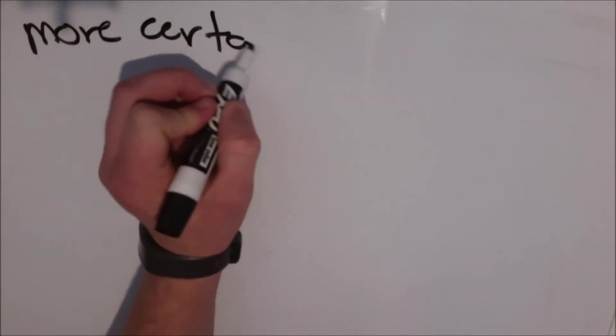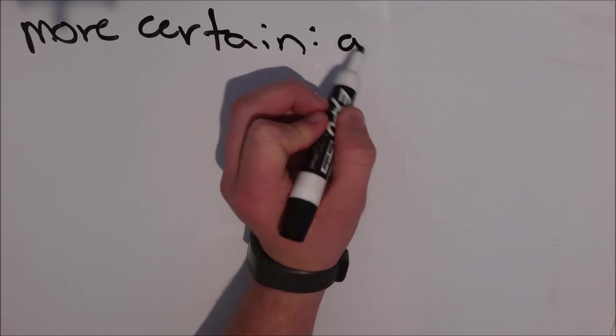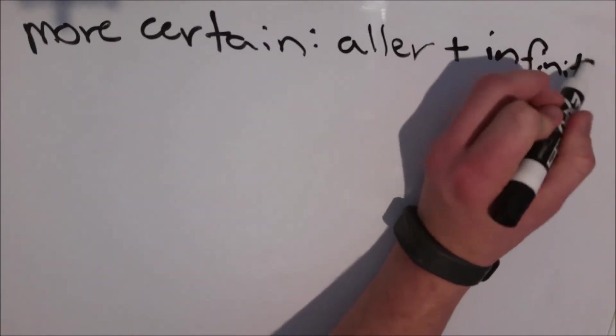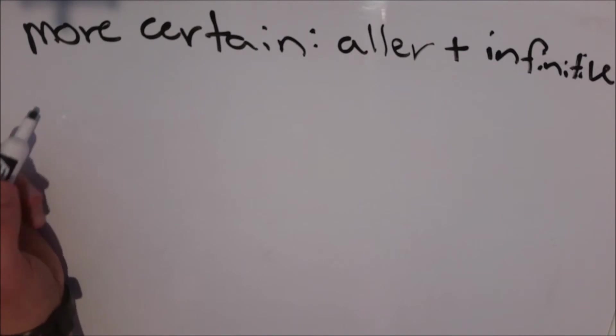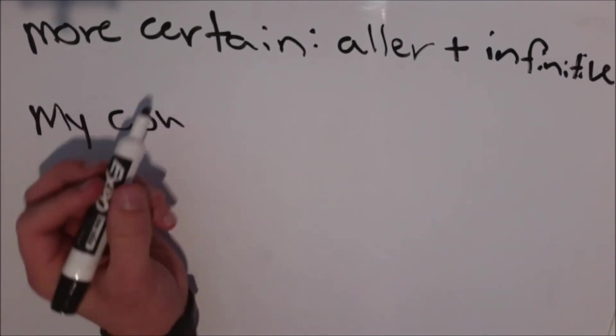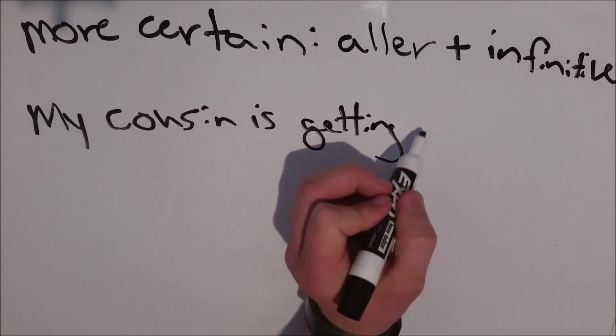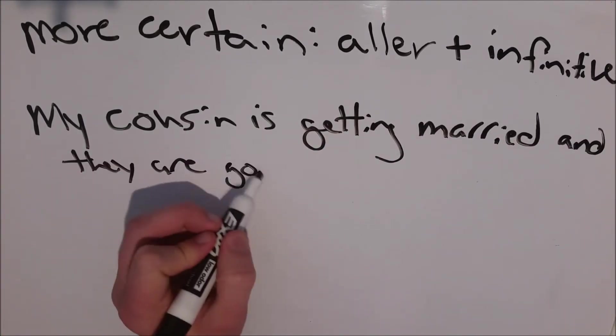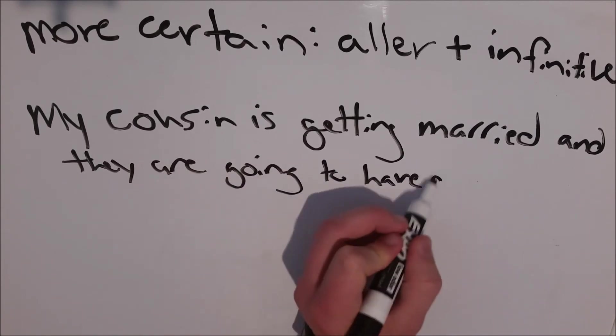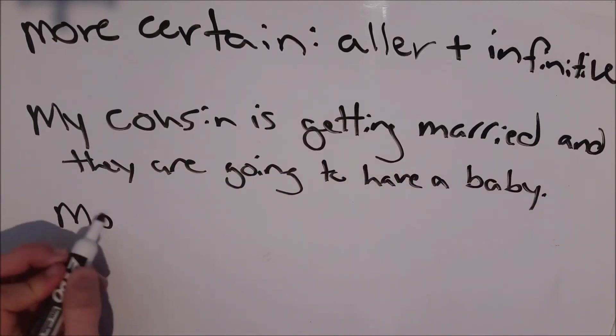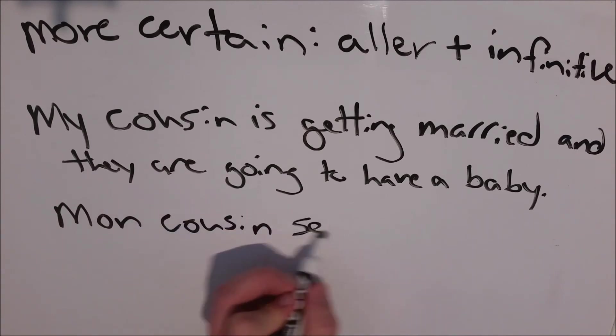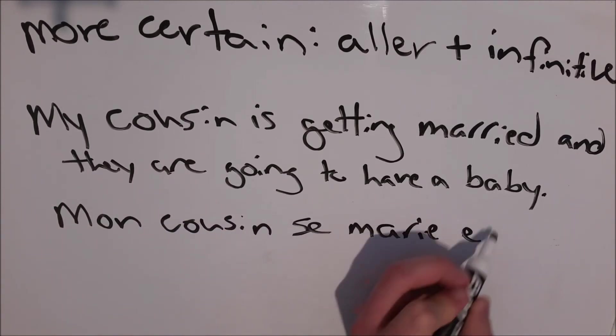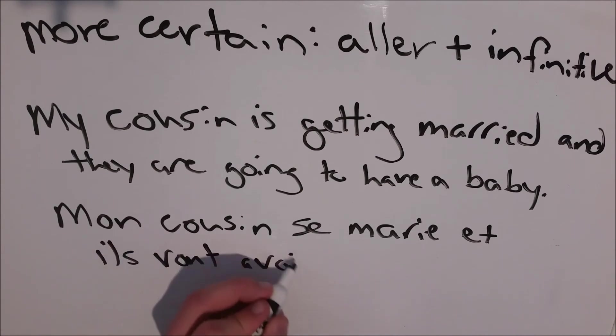You can also just take the last part on its own, saying, I will have a baby. For more certain things, you want to use aller plus infinitive. So let's take this sentence again. My cousin is getting married, and they are going to have a baby. Or if you compare it to saying, I will have a baby, to I am going to have a baby. Which one are you using to tell someone that you are pregnant? Mon cousin se marie, et ils vont avoir un bébé.